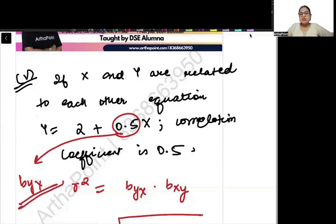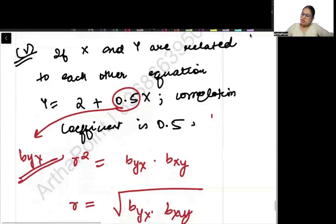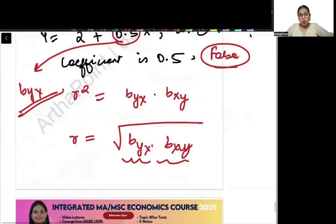In this I am only given byx. I am given how y is regressed on x, what about how x is regressed on y and what is the slope of that? I am not given that, so I can say this will be a false statement because this is just giving me byx. I need to know bxy to find out the value of r square or r.